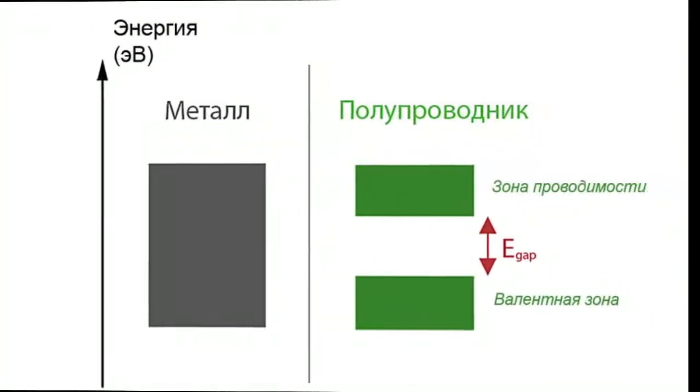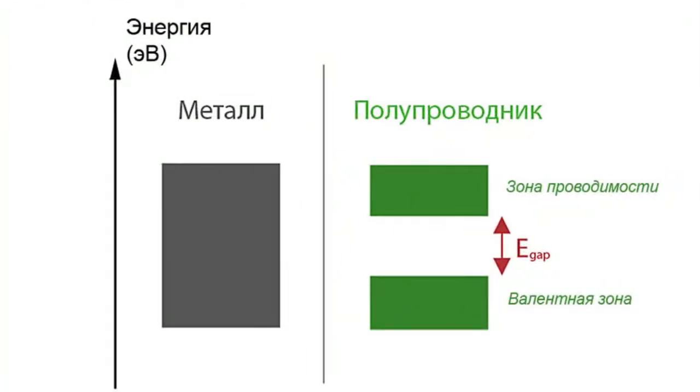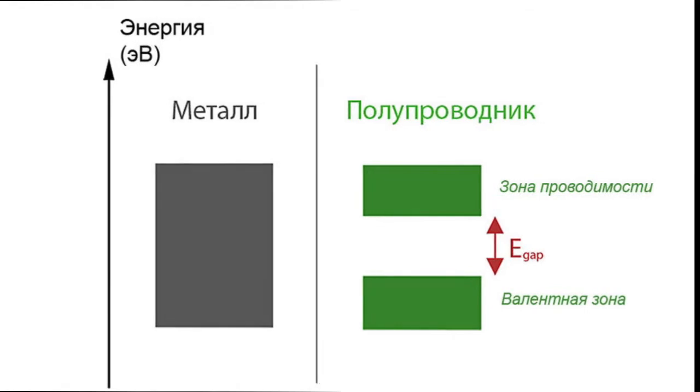Energy gap is a range of energy values which the electron cannot have in a perfect, that is, defect-free crystal. Band gap is the width of the energy gap between the bottom of the conduction band and the top of the valence band, where there are no allowed states for the electron.